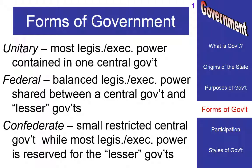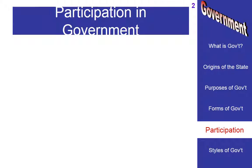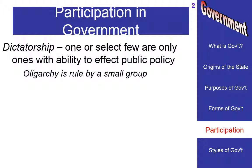While we look at where power is located, we can also look at how people participate in the government as a way to describe it. First of all, we can look at what is called a dictatorship. This is where one person or very few people are the only ones with the ability to make any effect on public policy. There is no voting — these people simply make all the rules.